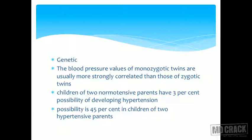What are the genetic loci for hypertension? This is very difficult to determine. Hypertension is essentially polygenic and will remain polygenic for the foreseeable future. Children of two normotensive parents have only a 3% chance of developing hypertension. But if both parents are hypertensive, the child has a 45% chance of developing hypertension, which is pretty high. All these factors tell us that hypertension has a very high genetic component.